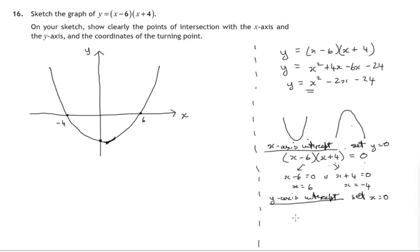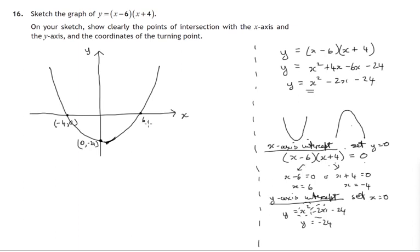Setting x equals 0 gives us the y-axis intercept. Taking y equals x squared minus 2x minus 24 and substituting x equals 0: the x squared term is 0, as is the 2x term, so y equals negative 24. So the y-axis intercept is the point (0, -24). We should label the coordinates of the points of intersection on the graph.